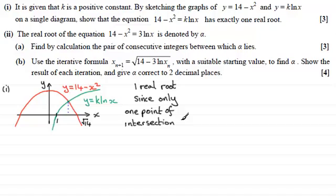Now, in the second part, we're told that the real root of the equation 14 minus x squared equals three times the natural log of x is denoted by alpha. And we've got to, in part a, find by calculation the pair of consecutive integers between which alpha lies. So again, if you'd like to have a go at this and haven't done so already, just give you a moment to pause the video. Do come back again when ready and you can check your solution against mine.